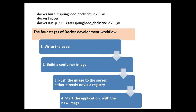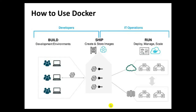To put Docker in a simplified way from a development perspective, we can divide the Docker workflow into four blocks: write the code, build the container image, push that image to a server either directly or via a registry, and then start the application with the new image. Developers build the application source code, create packages as images, and provide them to containers for deploying, managing, and scaling the application into cloud or virtual environments.